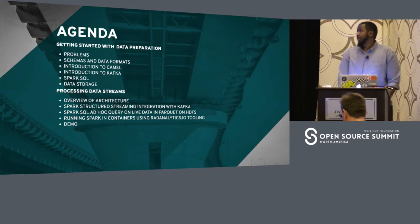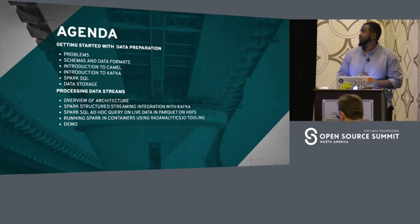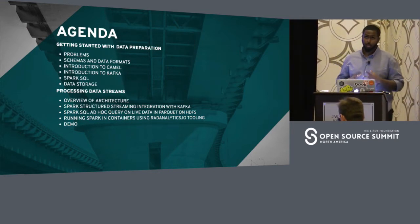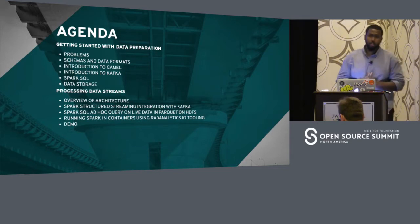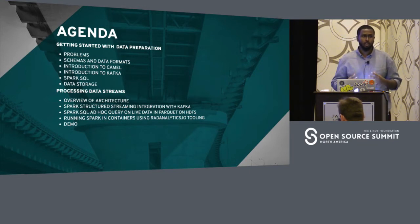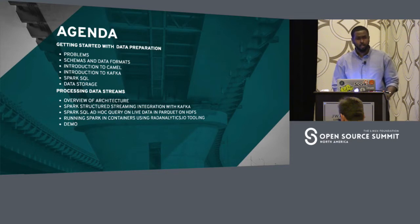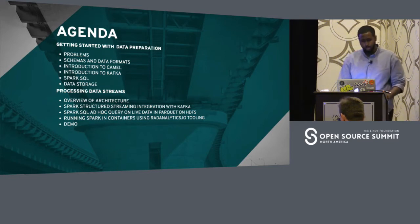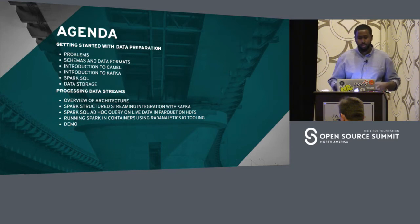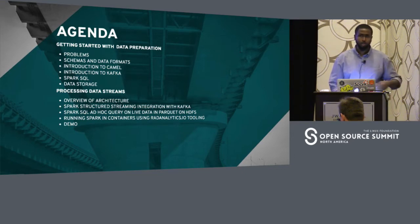The agenda for today: I'm going to talk about data preparation, which is pretty important before you build a data pipeline. You need to make sure the data is in a format that's structured, usable, and queryable. We'll talk about the criteria of what a good data format is, different technology you can use to extract data from different systems, and then stream processing using Apache Spark running in containers on OpenShift. OpenShift has Kubernetes and it's our platform as a service. Everything I'm using here is open source.